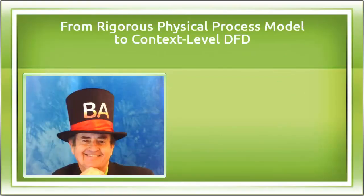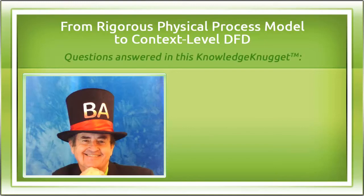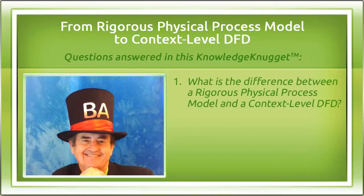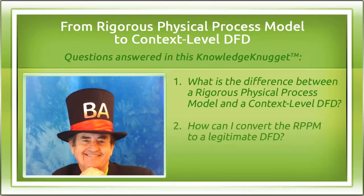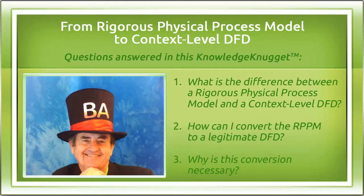Hello, I'm Tom Hathaway. I'm wearing my BA hat to symbolize that anyone in an organization might do business analysis, whether or not they have the job title business analyst. So let's talk business analysis. This knowledge nugget explains the difference between a rigorous physical process model, or RPPM, and a context level data flow diagram, or DFD. It introduces a simple yet powerful technique for converting any RPPM to a legitimate DFD and explains why this conversion is necessary. This simple technique will help you when you are the one wearing the BA hat.